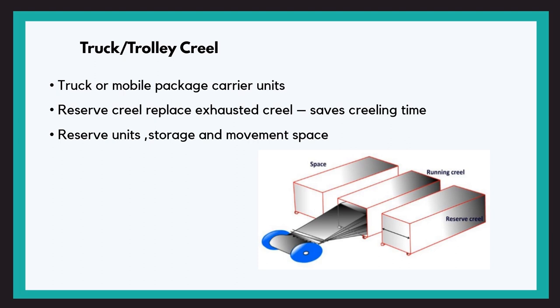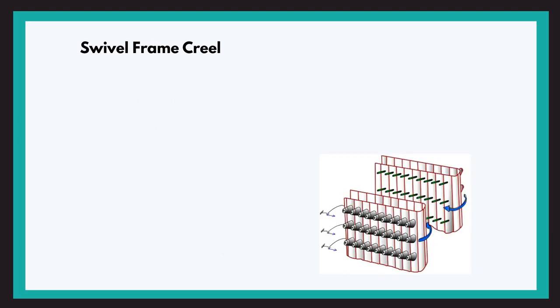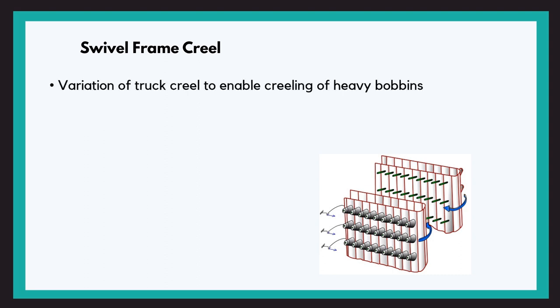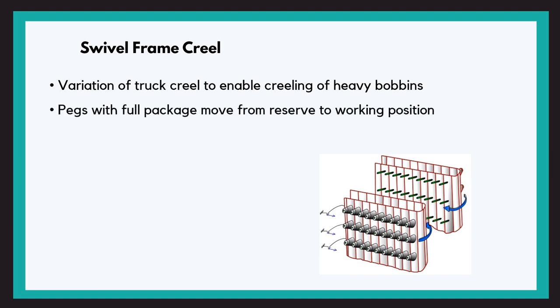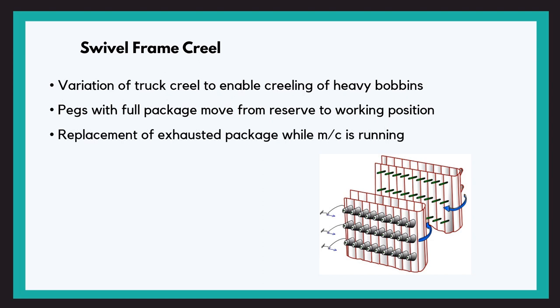In case the creel size is very large or the bobbins are very heavy, the movement of the trucks becomes difficult. In that case, swivel frame creel is used. In the swivel frame creel, the package holders with full packages move from inside, that is the reserve position, to outside, that is the working position, when the running packages are exhausted. This saves a lot of time.